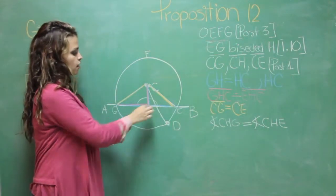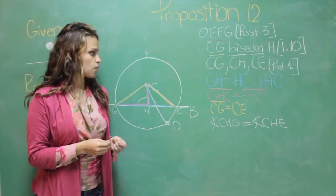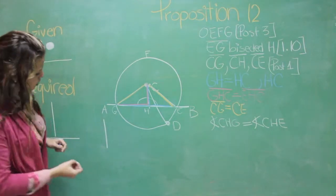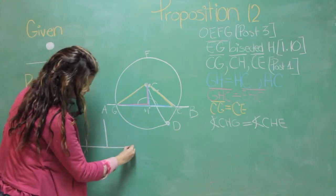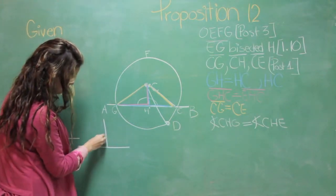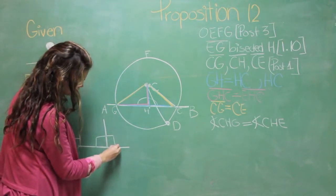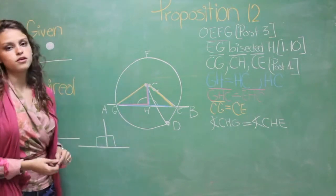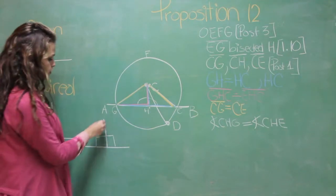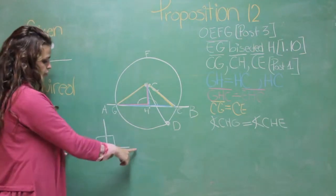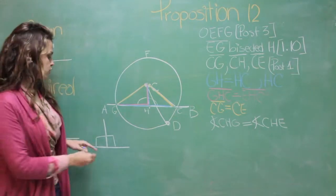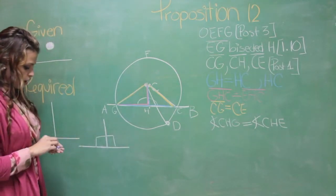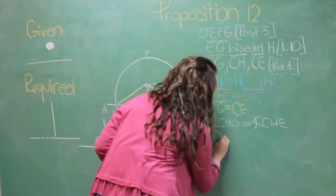But when a straight line is set up on another straight line, it creates adjacent angles equal to one another. Each of them is right. And the straight line that is standing on the other is called perpendicular to the line on which it stands. We know this because of definition 10.